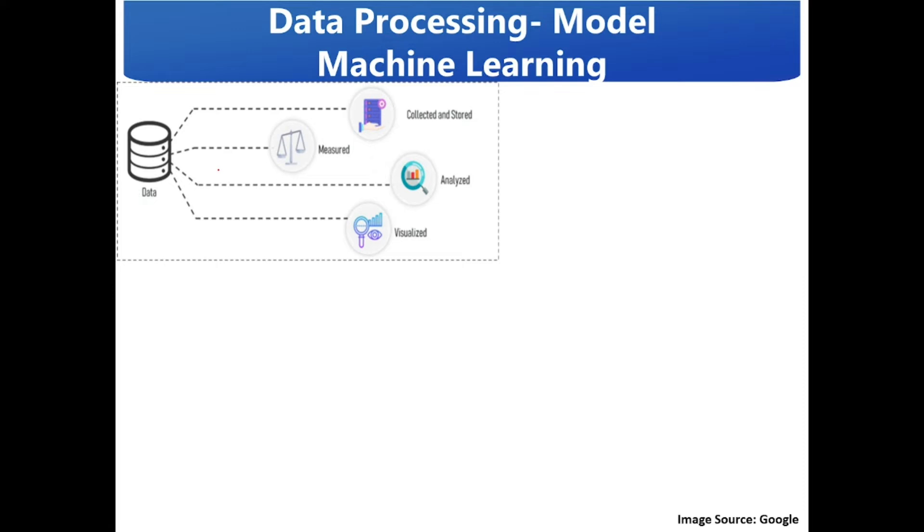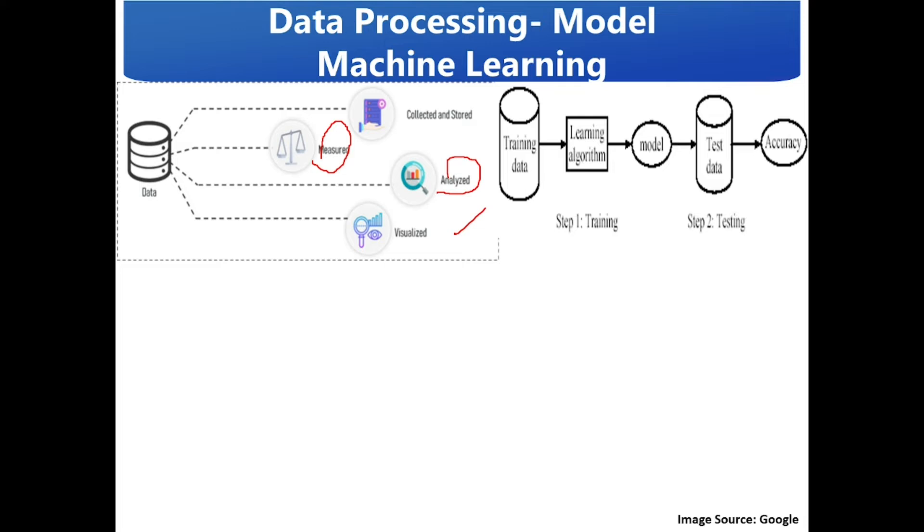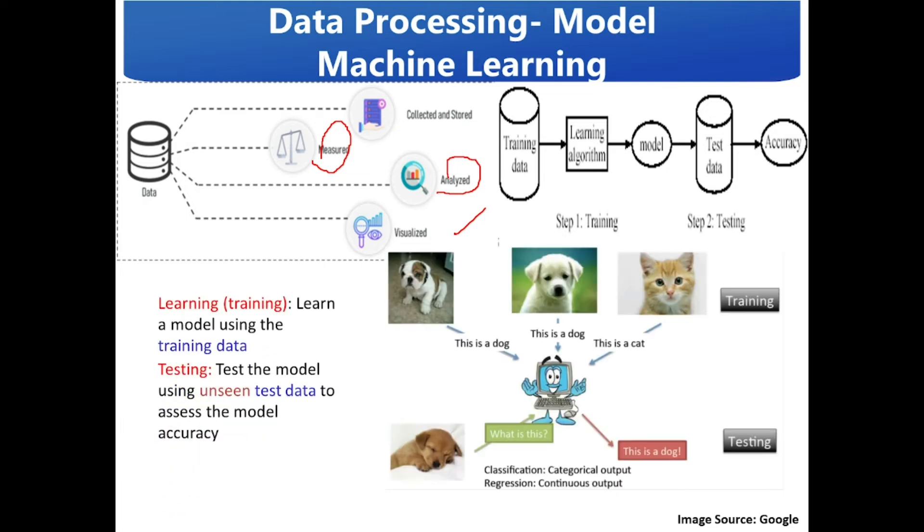Now it's time to process the collected data. Data analytics is a process that involves a modeled data to be examined. We have machine learning models which learn and act like humans with observations and real world interactions. Here we have training data and test data. In this example, the system is being trained with images of dog and cat, and then it is being tested with a dog image and the output is predicted as dog.